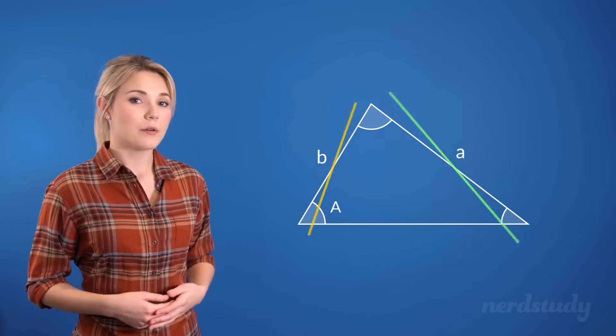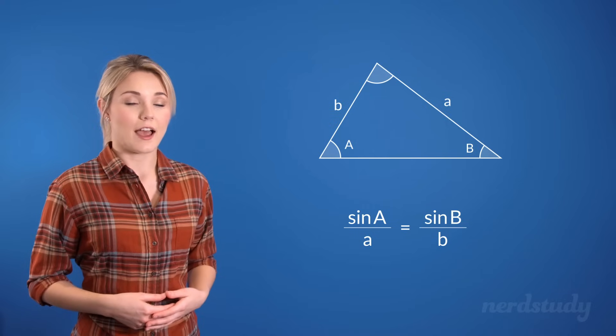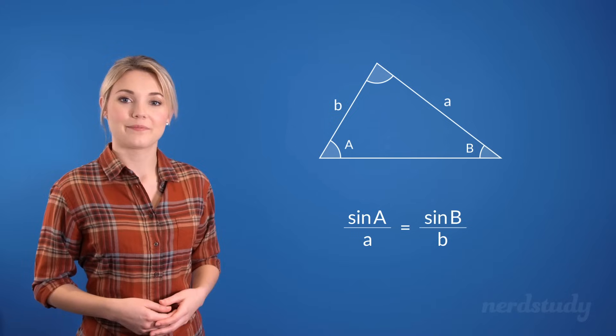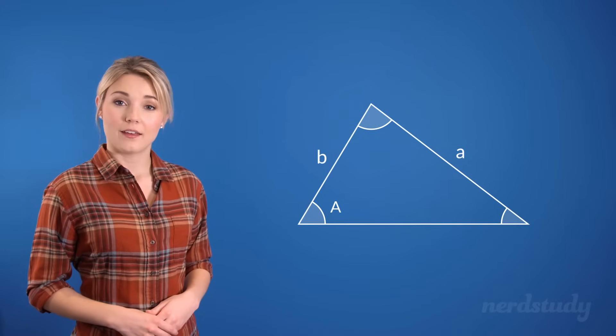So we would know how to solve this angle here with the help of the sine law, which is just sin A over a equals sin B over b. However, what happens if a is shorter than b?